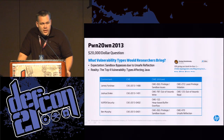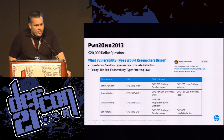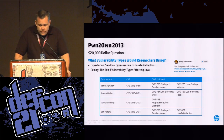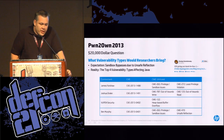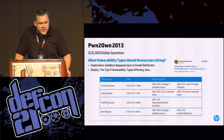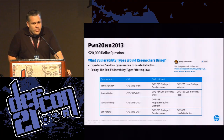Our expectation was that researchers would bring sandbox bypasses due to unsafe reflection, but that actually turned out not to be the case — they brought the top four vulnerability types affecting Java. James Forshaw brought a least privilege violation. Josh Drake brought an out-of-bounds write and an out-of-bounds read. Vupen Security brought a heap-based buffer overflow. And Ben Murphy brought an unsafe reflection bug. It's interesting that basically all the top vulnerability types could be leveraged to win money in our competition.